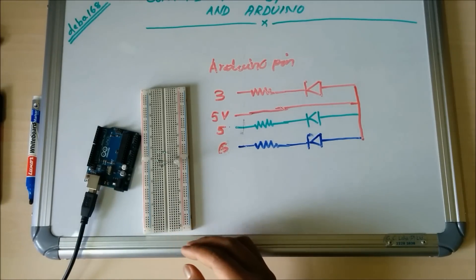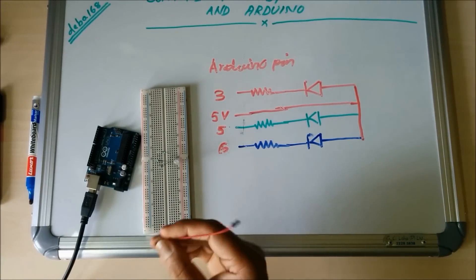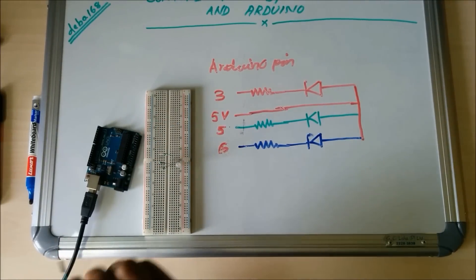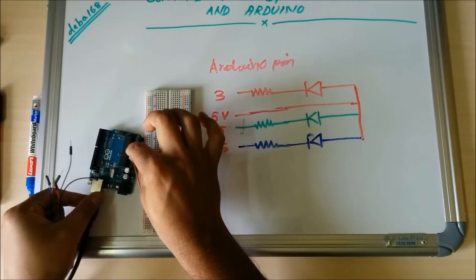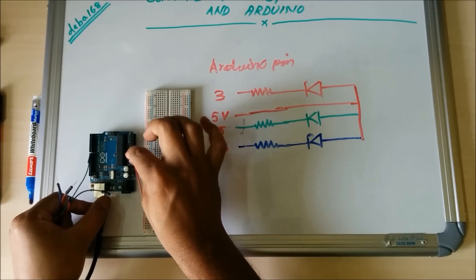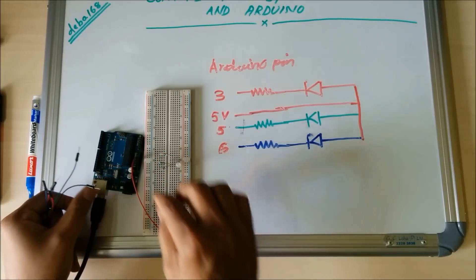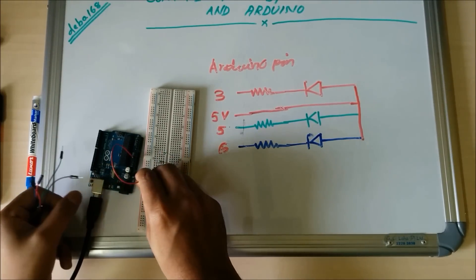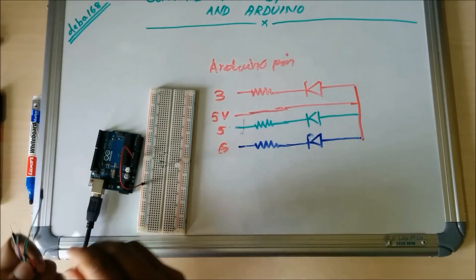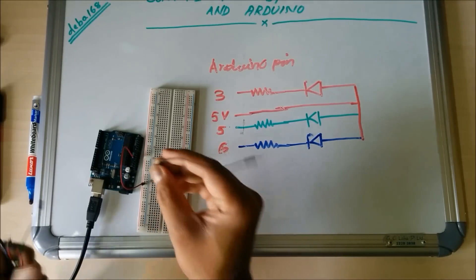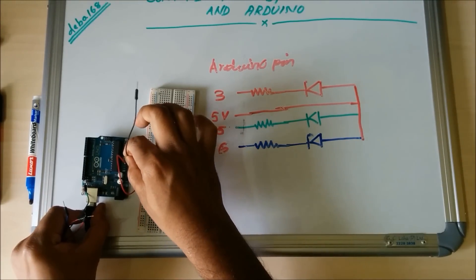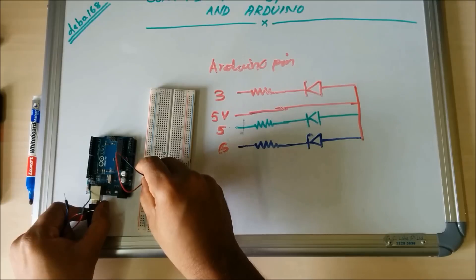Now connect everything to Arduino. First I am going to make a power supply rail. For power supply I am connecting the 5 volt to red rail and the ground pin to blue rail.